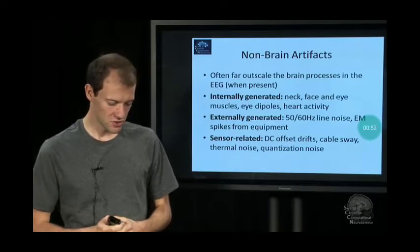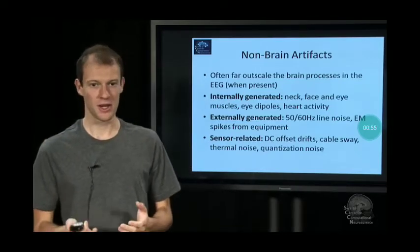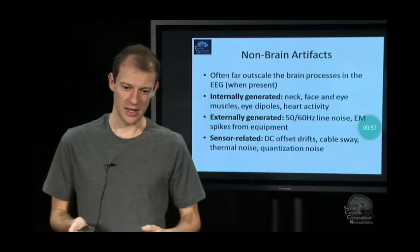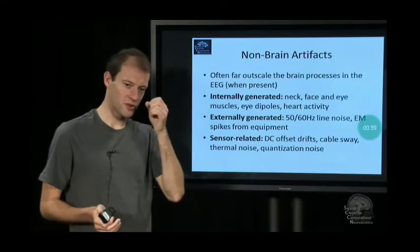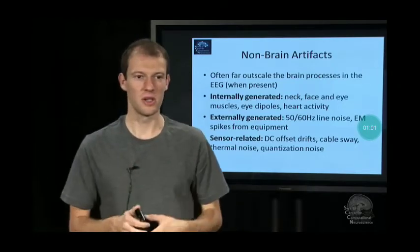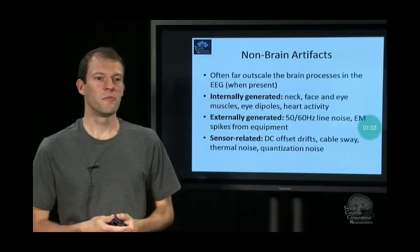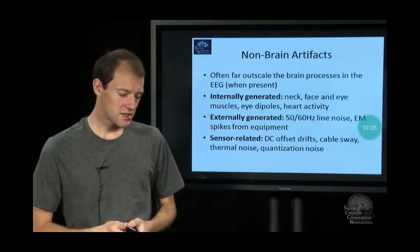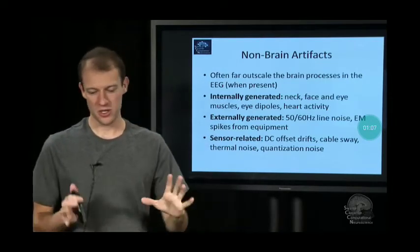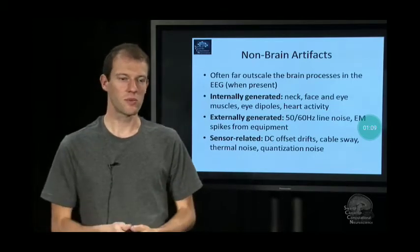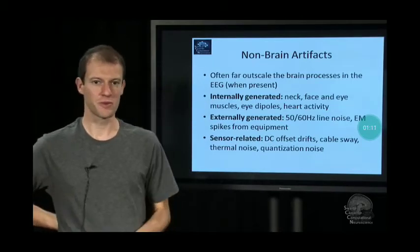And also it turns out the eyes themselves are actually electrical dipoles. I don't entirely know why, but it probably has something to do with these retinal neurons that are all aligned in the same way. The eyes actually project into the EEG as a dipole, and when they turn, the projection pattern changes.